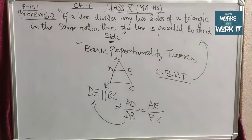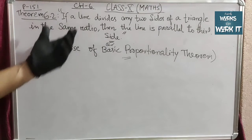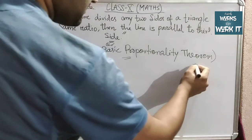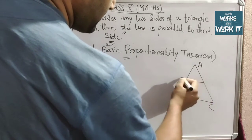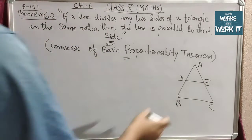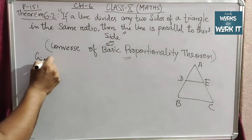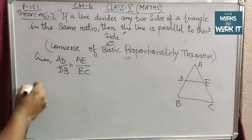We will now prove Theorem 6.2, the Converse of the Basic Proportionality Theorem, by taking a triangle ABC. Points D and E are on the two sides of the triangle and they are in the same ratio. So what is given: AD/DB = AE/EC. We need to prove that DE is parallel to BC — that means we have to go in reverse of the Basic Proportionality Theorem.